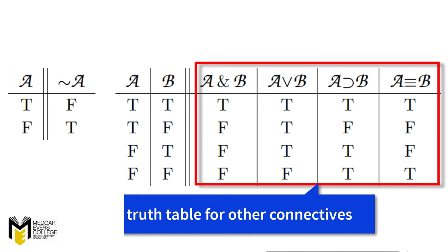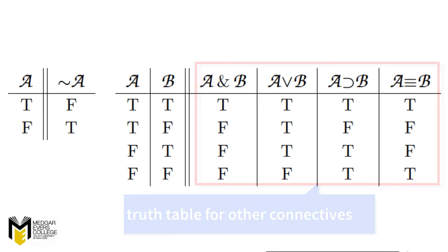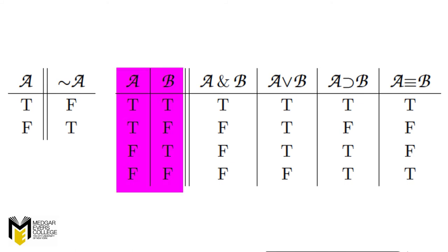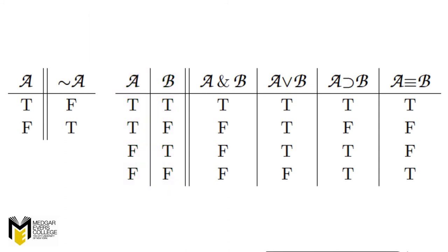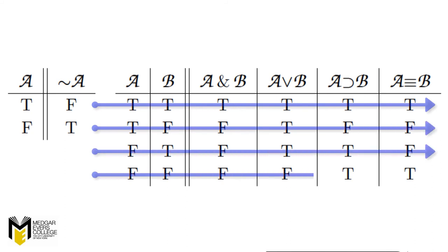The other connectives involve two variables, which gives us four possibilities for combining the values of true and false. The columns to the left of the double line in these tables are called reference columns. They specify the truth values of the individual variables, with each row of the table assigning a different set of truth values to the variables. The full table supplies every possible combination of truth values for the sentence.